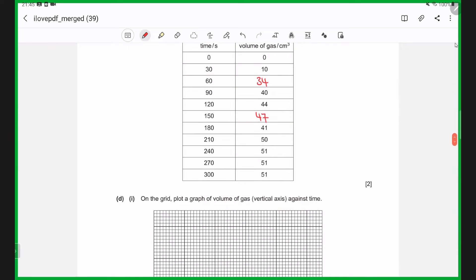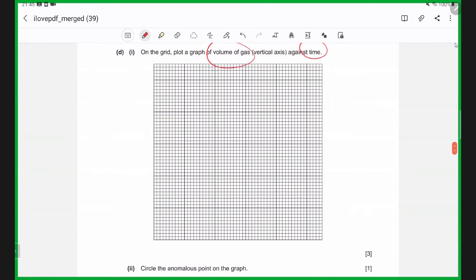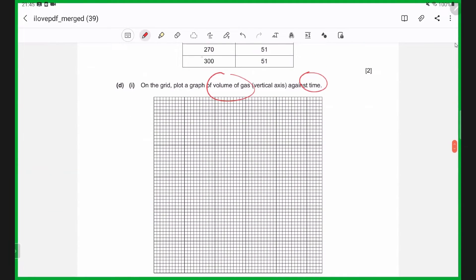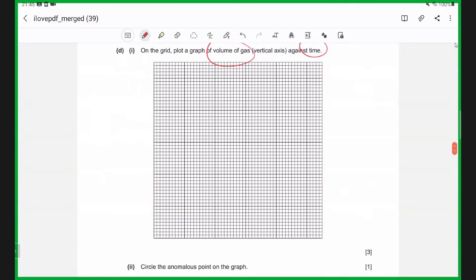Now, it's time to plot the graph of volume of gas against time. Remember, volume of gas is your vertical axis and the time is your x-axis. So first, we'll take a look at the maximum values. This is your x, the time, and then the y is the volume of gas. So x goes up to 300, y goes up to 51, or presumably somewhere near 51. So let's take a look at the graph paper that we're provided with.